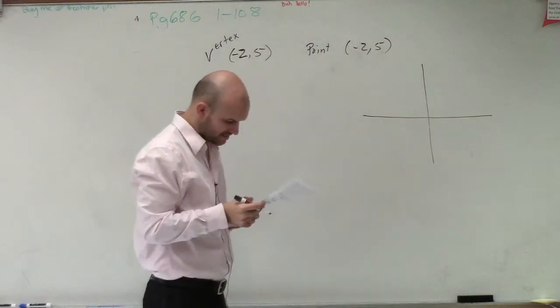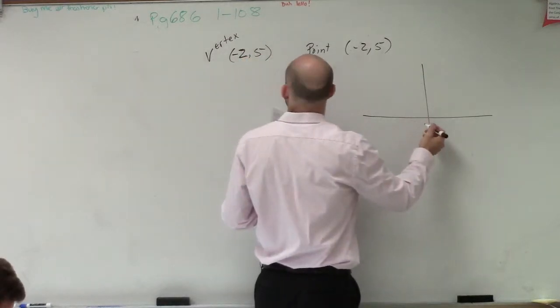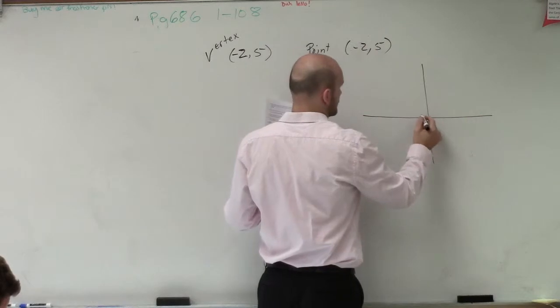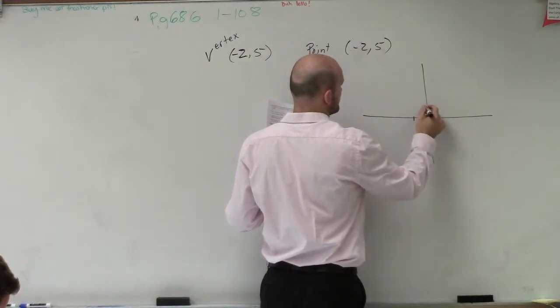So this says this one is a vertex at 2 comma or negative 2, 5. So I go over negative 2 and then 5: 1, 2, 3, 4, 5.